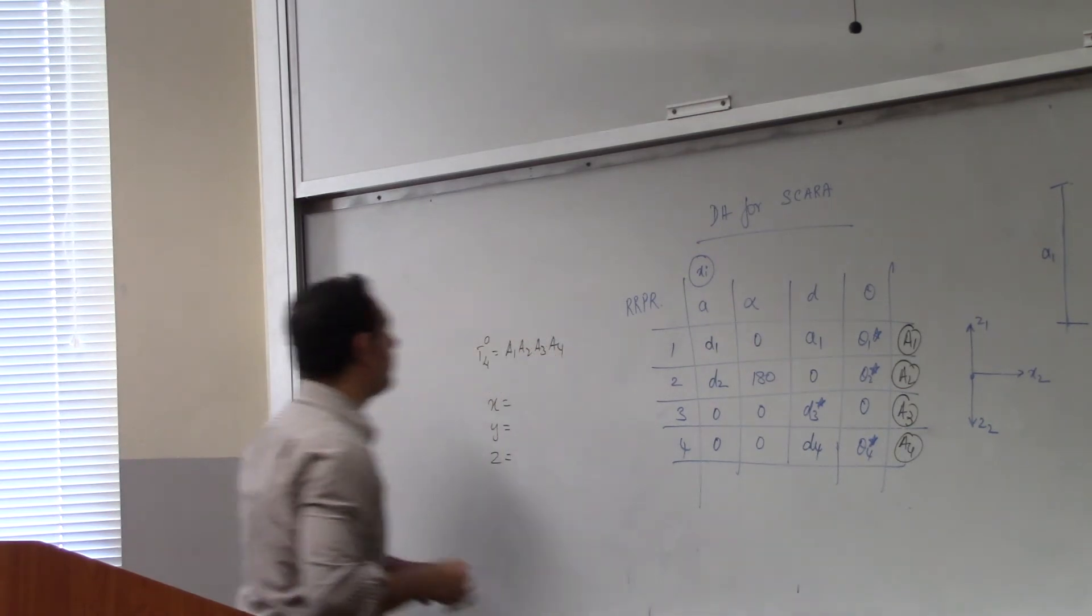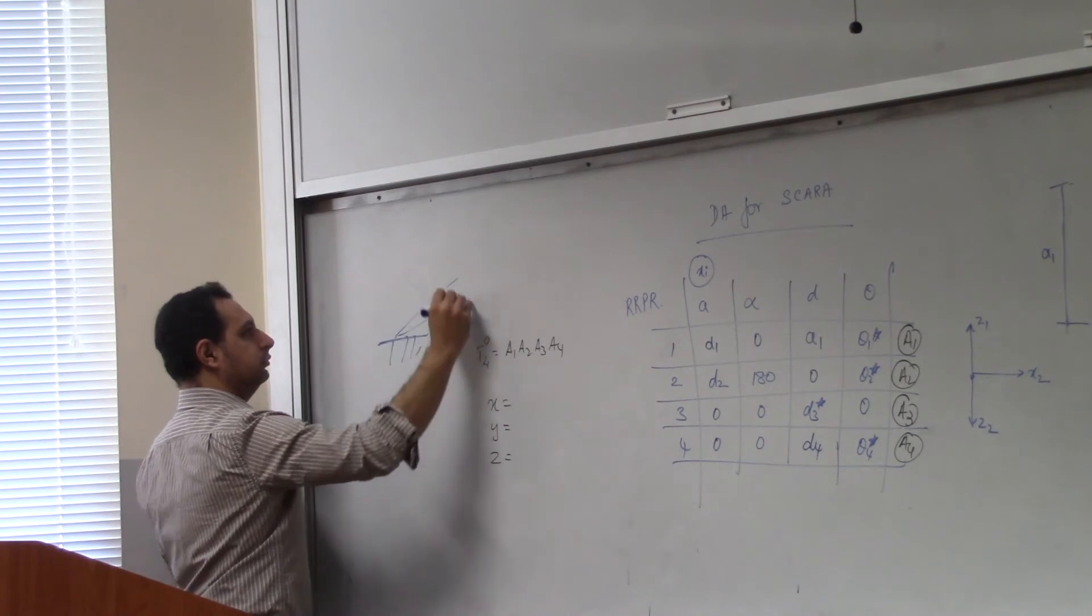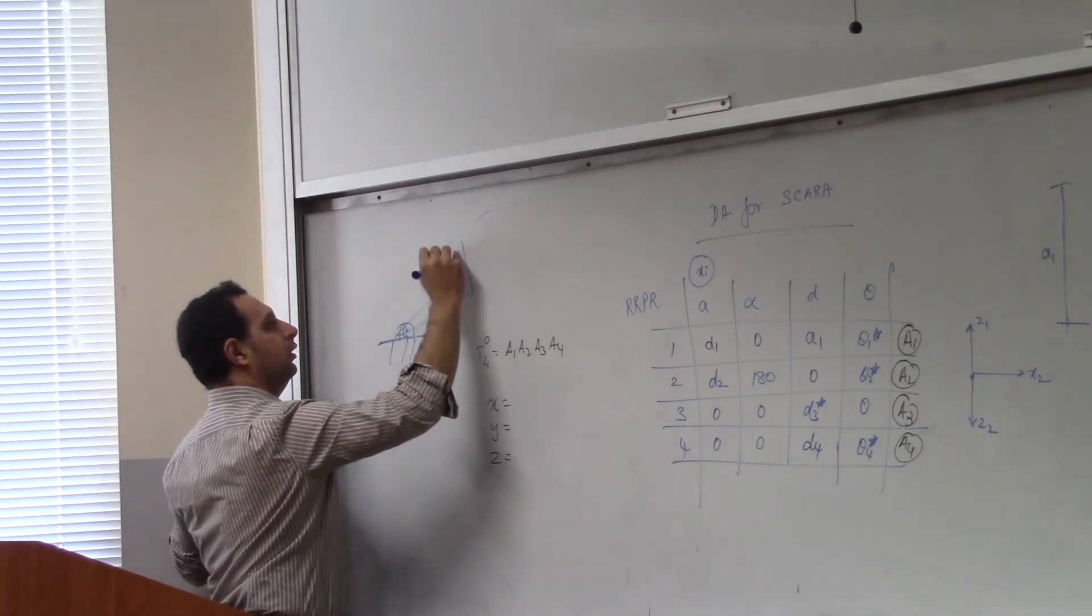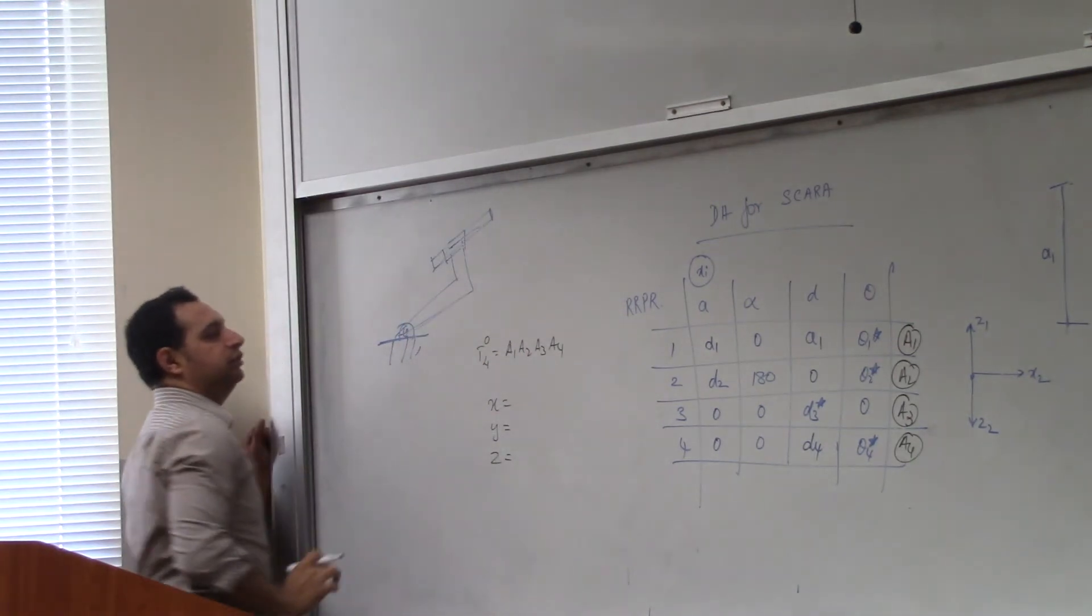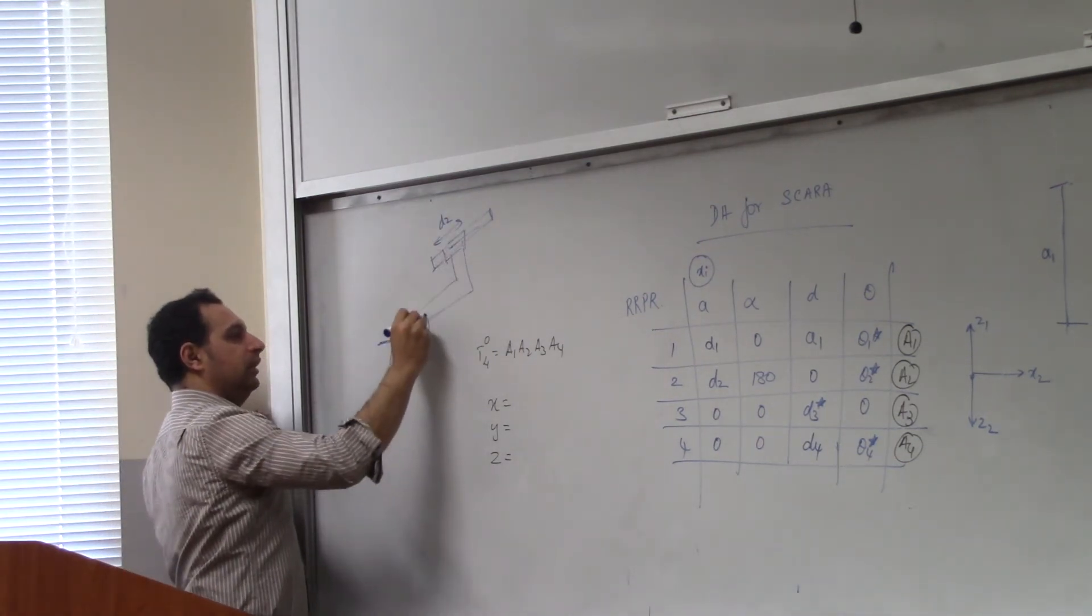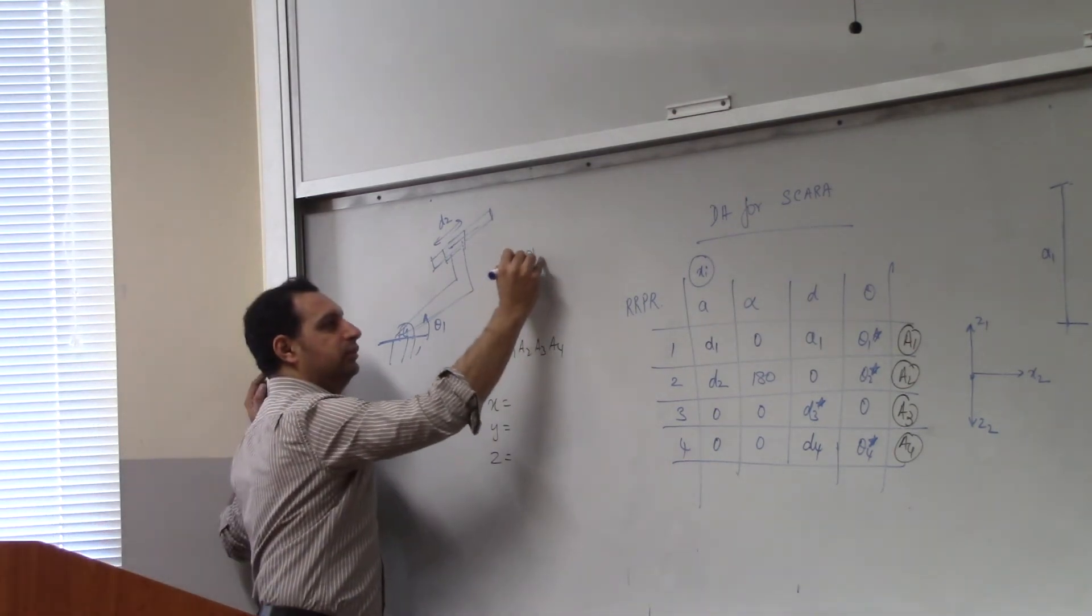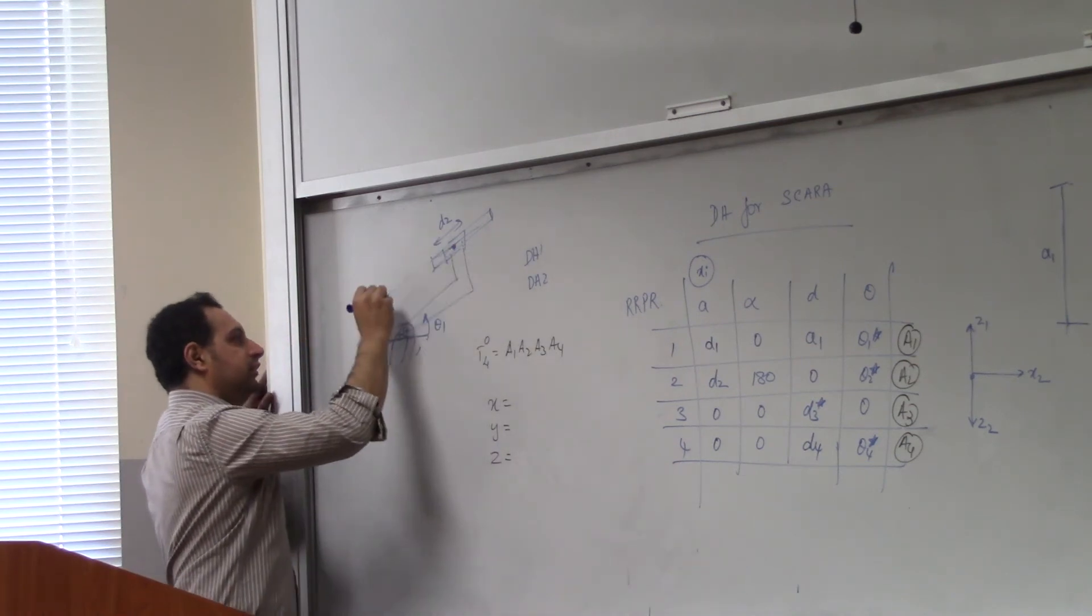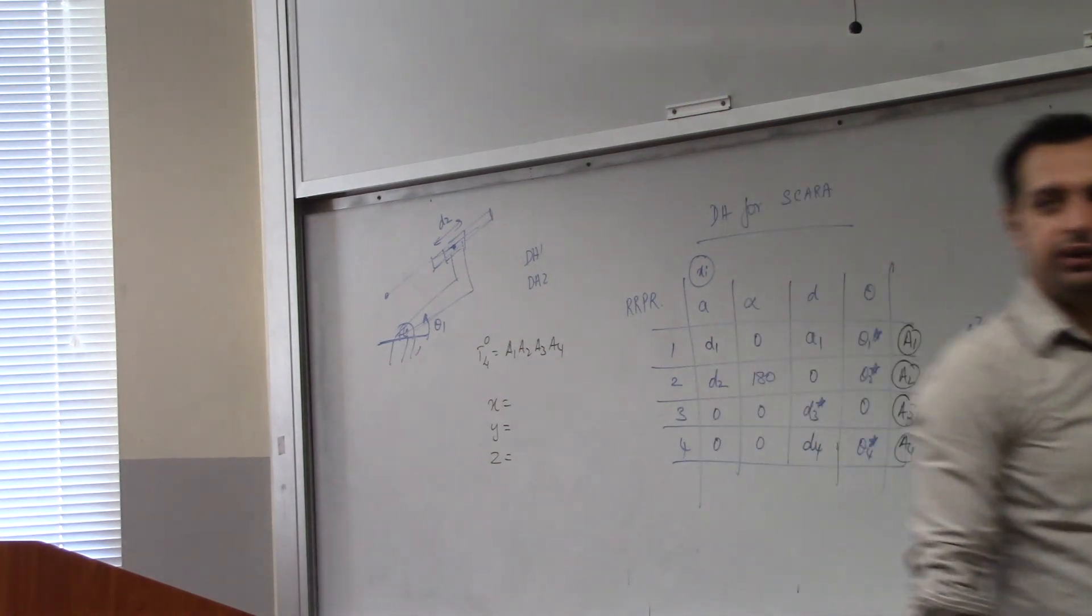In this case, right, this is only a two degree of freedom manipulator. This is D2, and this is theta1. You will find it that, to satisfy these two rules, it's a little difficult. So you will have to move this one, this origin, here. Okay. Anyways, I will give it to you for practice, if not we will solve it in class.